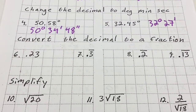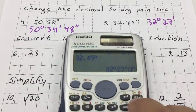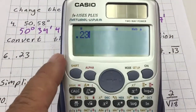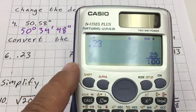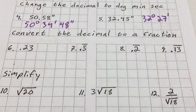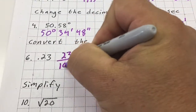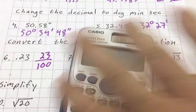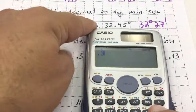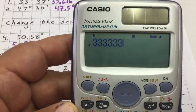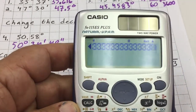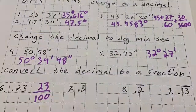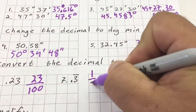Now we're converting a decimal to a fraction. We should know how to do this by hand, but we're practicing on the calculator. Type in .23 and just hit equals — the calculator generates 23 over 100. For .3 repeating, type in .3 and generate it a whole bunch of times — at least 16 times to overrun the calculator's program — then hit equals. It gives one third.